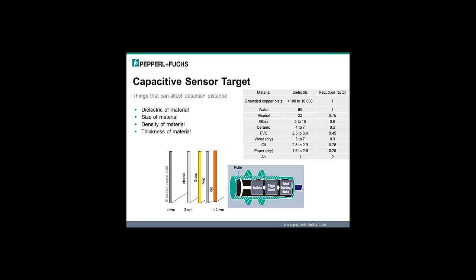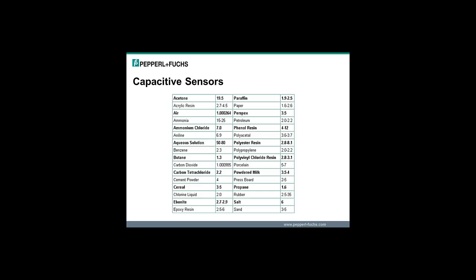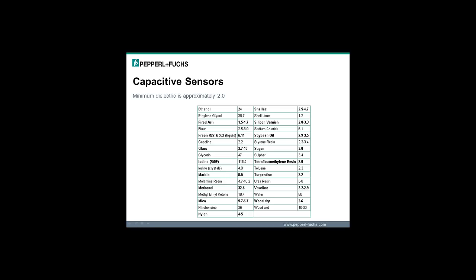As mentioned earlier, the dielectric, size, density, and thickness of the material may have an effect on the detection distance. If the dielectric of the material is less than metal or water, there will be some reduction factor for that material. If we have a CBB4-12GH60-E2-V1, the sensing range for grounded copper plate and water is approximately 4 millimeters. But if we try to detect oil with a dielectric of 2.9, the sensing range would be approximately 1.12 millimeters. The dielectric chart on this page and the following pages show the dielectric for common materials. Here are a few materials with their dielectric listed. The minimum dielectric necessary for a capacitive sensor to detect a material is approximately 2.